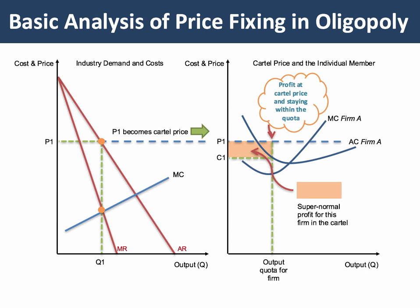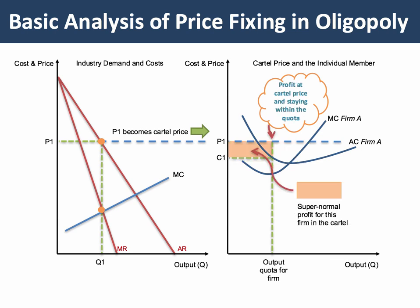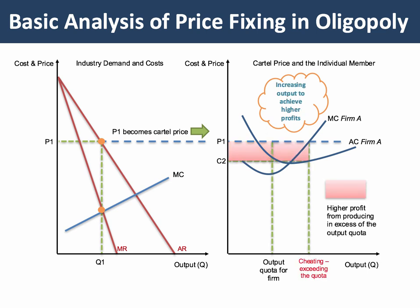In theory, the cartel as a whole maximises joint profits. But can you see the problem? Although this firm is making some profit at price P1, there's a potential here for making a little bit more profit. They could just increase their output a little bit and their cost will be lower, the way the cost curves have been shaped. If they decided to cheat on the quota and double their output, selling at the cartel price P1, they could make a lot more profit. By overproducing and maybe just undercutting the price a little bit — offering a hidden discount — you can increase output and raise your profits.